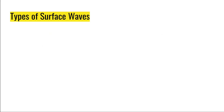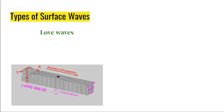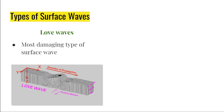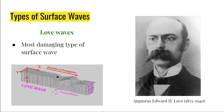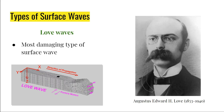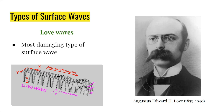In your module, the subtypes of surface waves were not really discussed, but here we will cover both. The first is called the love wave — named not after the word 'love,' but after the British mathematician Augustus Edward H. Love, who worked out the mathematical model for this kind of wave in 1911. Love waves are the most damaging type of surface waves.